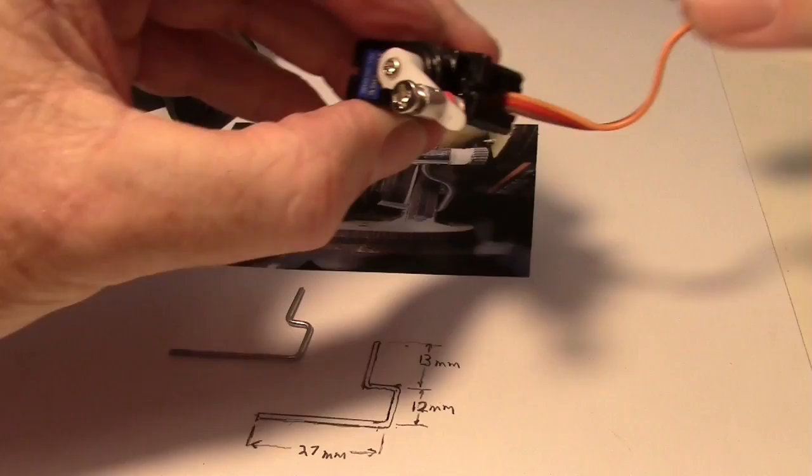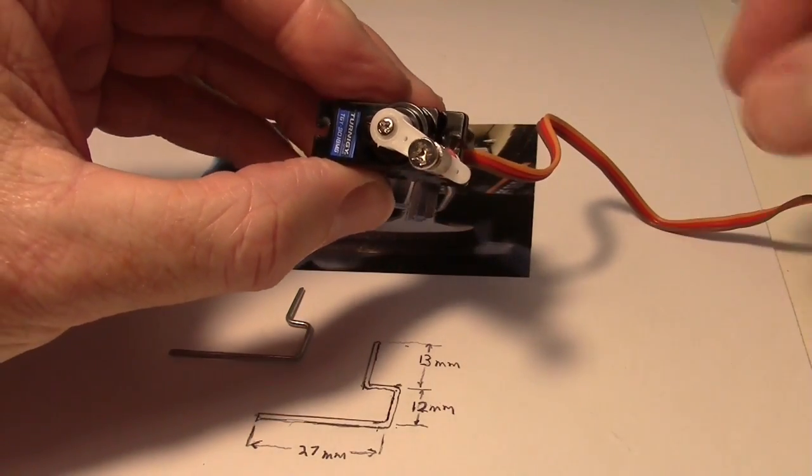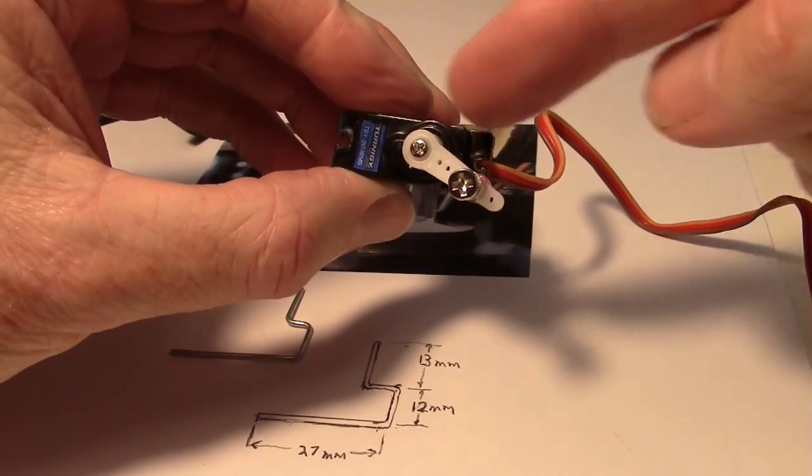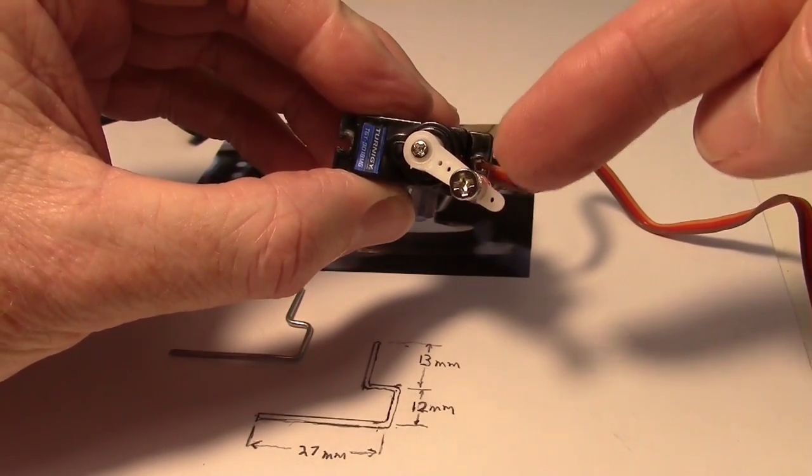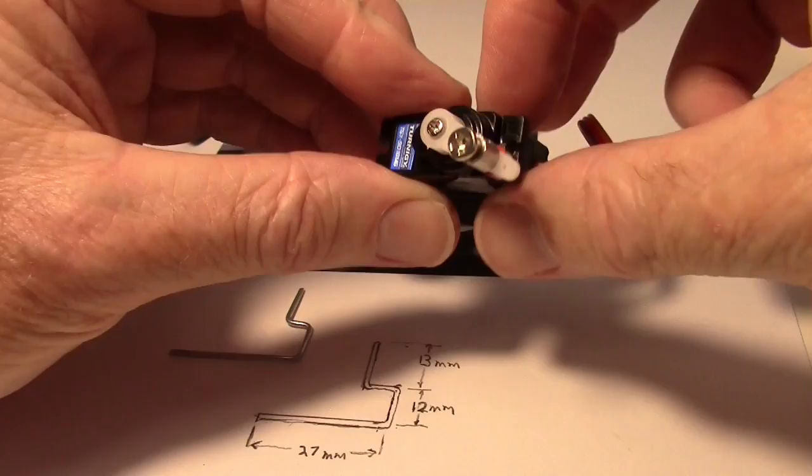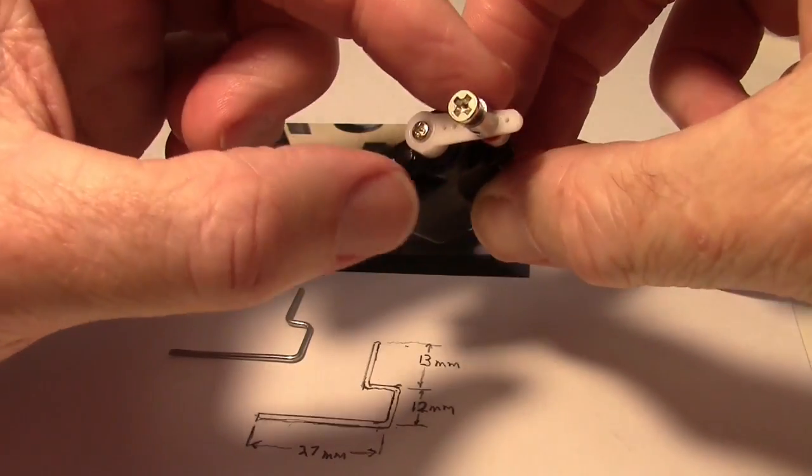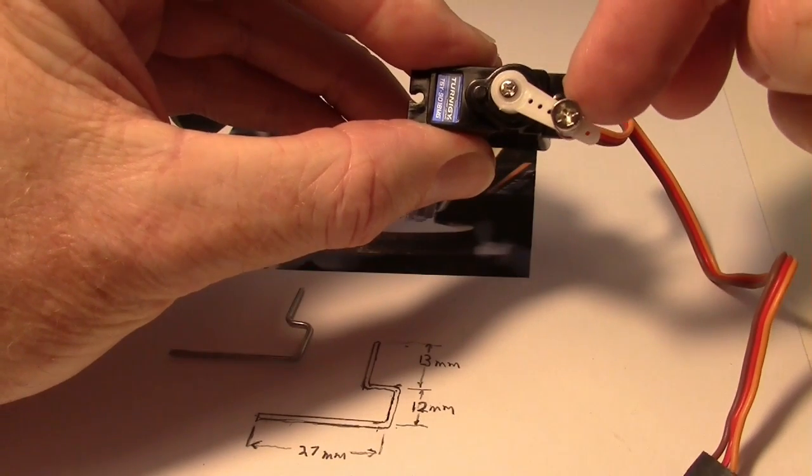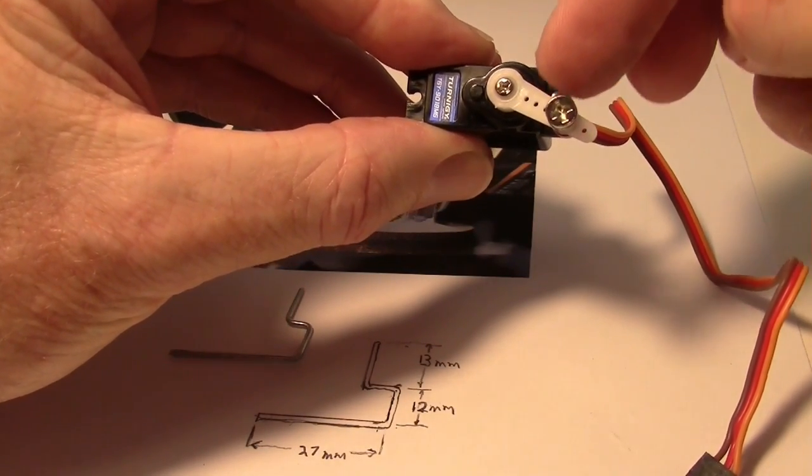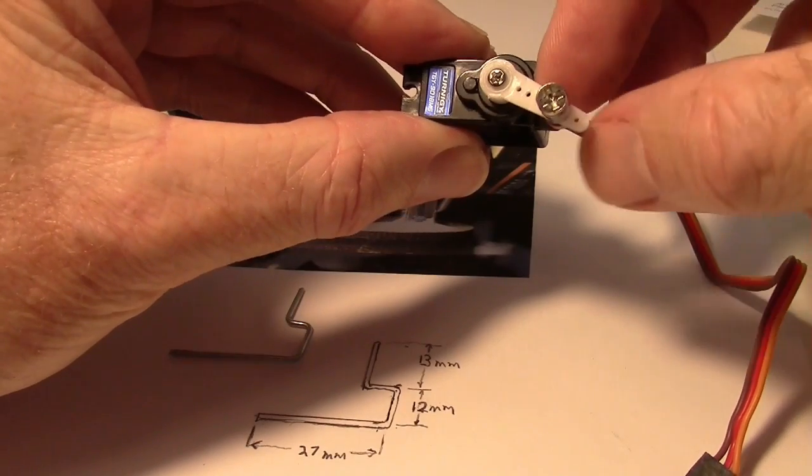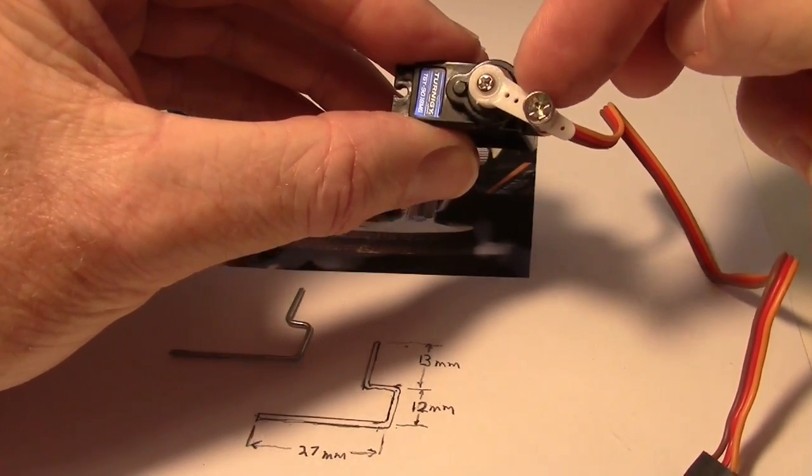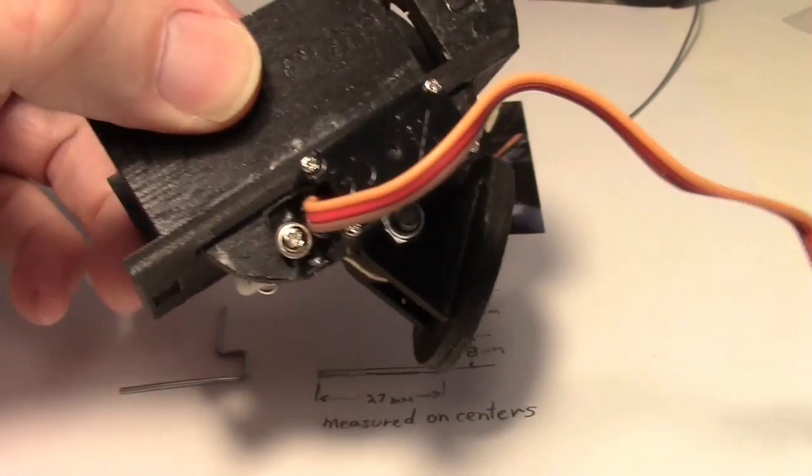And when the servo is in its center position, I want to have a slight down angle on my servo arm. And I have put the little push rod keeper here on the second hole back. That's just up to the user. The closer you have it to the middle, the finer the adjustment will be. And you'll have less throw but you'll have finer adjustment.